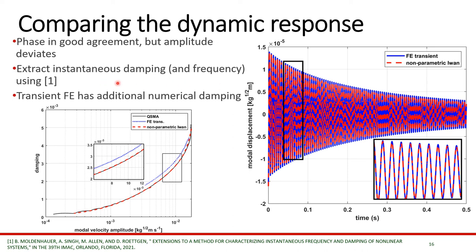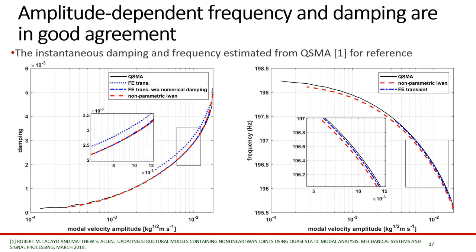To further analyze this, we extract the instantaneous damping and frequency and observed that the finite element model actually deviates from both the non-parametric I1 model as well as the QSMA results for the damping. This is due to some amount of numerical damping present within the finite element model itself. After correcting for this, we can observe that the damping matches almost perfectly and the frequency is also in good alignment, thus proving that the suggested non-parametric I1 model turned out to be pretty effective.